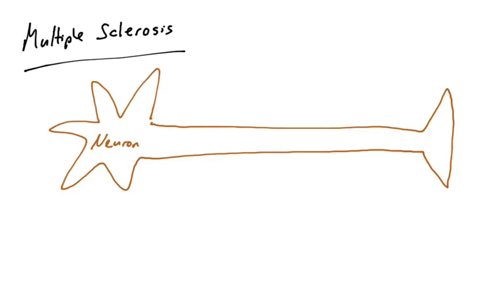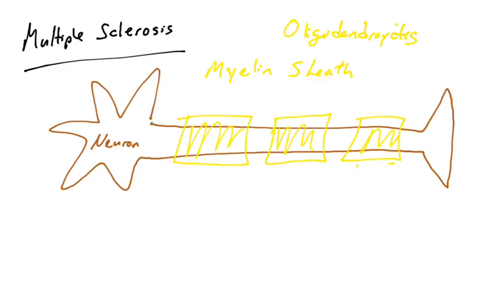There are two examples of type 4 hypersensitivity reactions that are autoimmune disorders covered in this video. The first one is multiple sclerosis. For neurons to efficiently transmit their action potential down the length of the axon, axons are coated with a layer of fatty protein substance called a myelin sheath. This substance is created by a type of cell called an oligodendrocyte. Oligodendrocytes are wrapped around the axons creating these myelin sheaths.